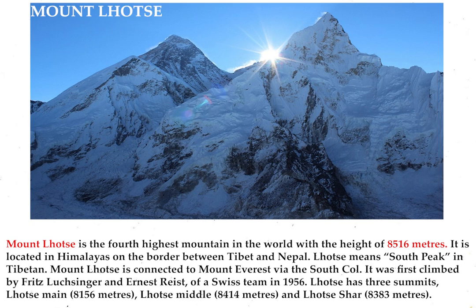Mount Lhotse is the fourth highest mountain in the world, with a height of 8,516 meters, located in the Himalayas on the border between Tibet and Nepal. Lhotse means south peak in Tibetan. Mount Lhotse is connected to Mount Everest via the South Col. It was first climbed by Fritz Luchsinger and Ernst Reiss of a Swiss team in 1956. Lhotse has three summits: Lhotse Main at 8,516 meters, Lhotse Middle at 8,414 meters, and Lhotse Shar at 8,383 meters.